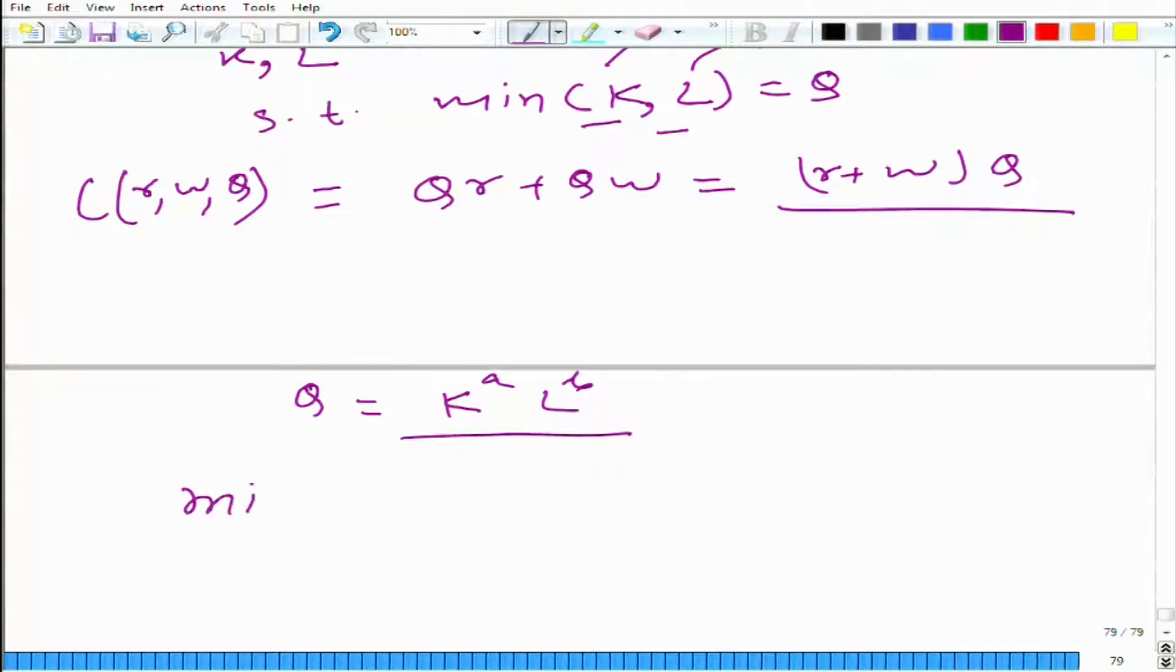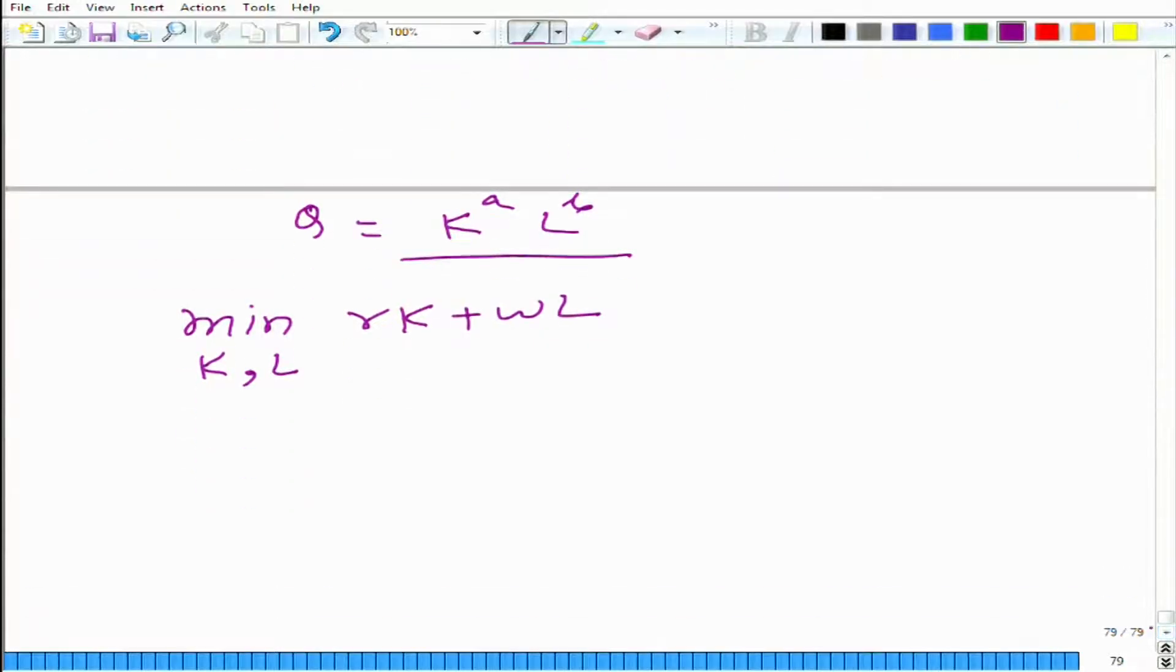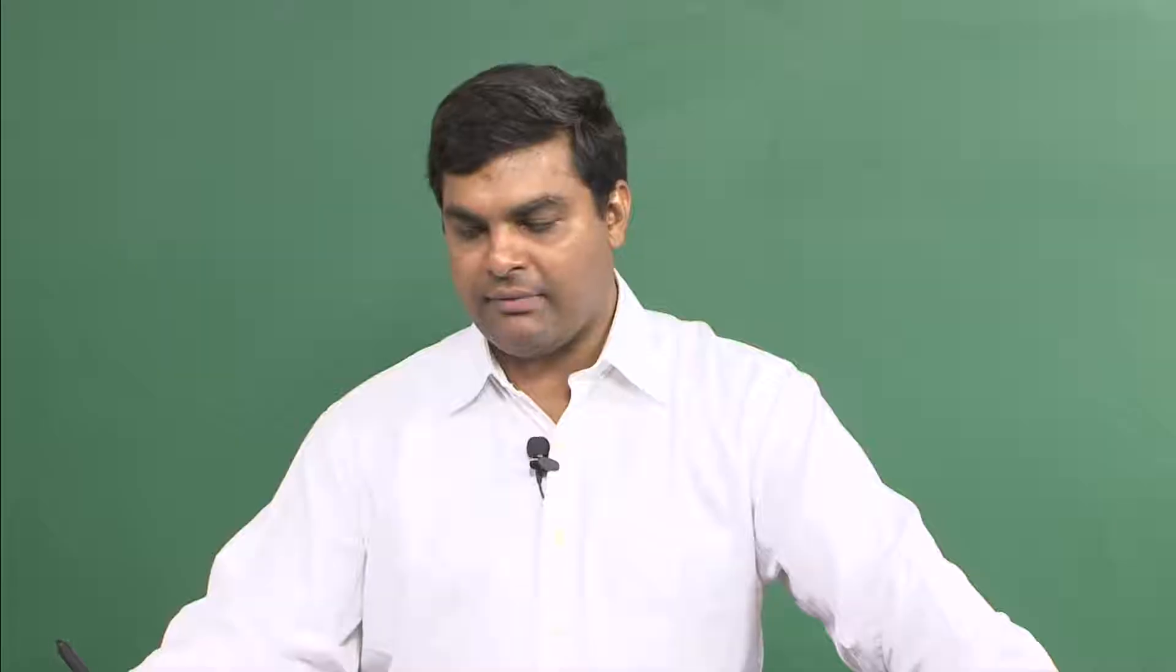What we have is minimize cost, that is r times k plus w times l, and we have to minimize with respect to k and l, such that k to the power a times l to the power b equals q. How can we solve it?